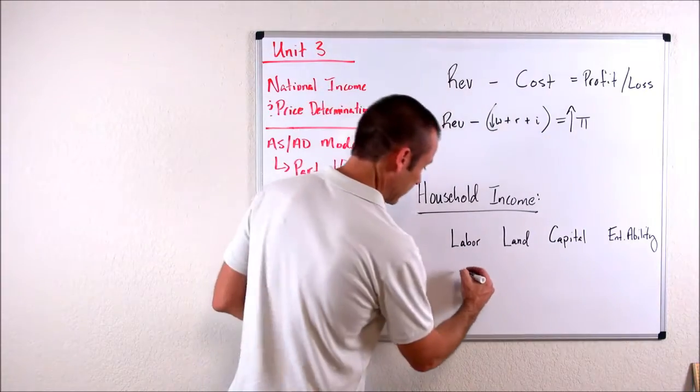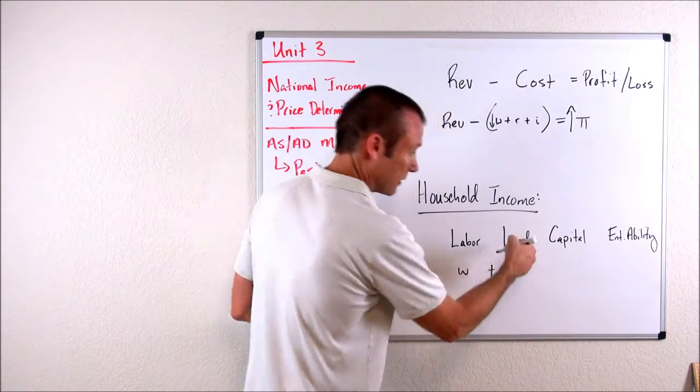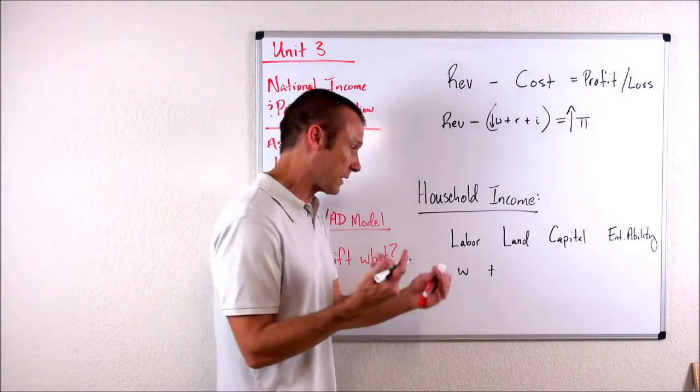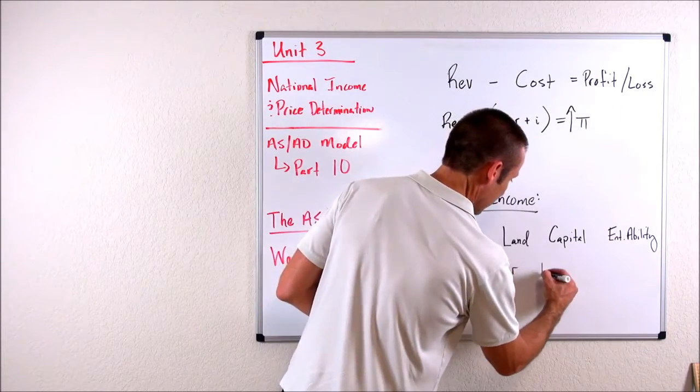For each resource they supply to the resource market, they get paid a specific type of income. The laborer gets paid a wage, the person who provides land gets paid rent.